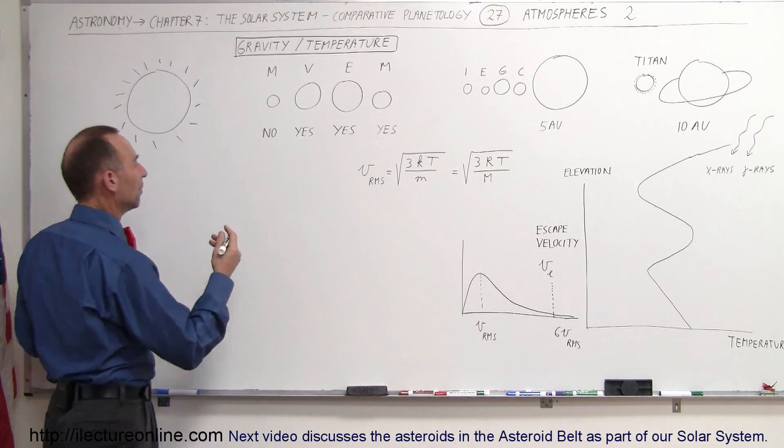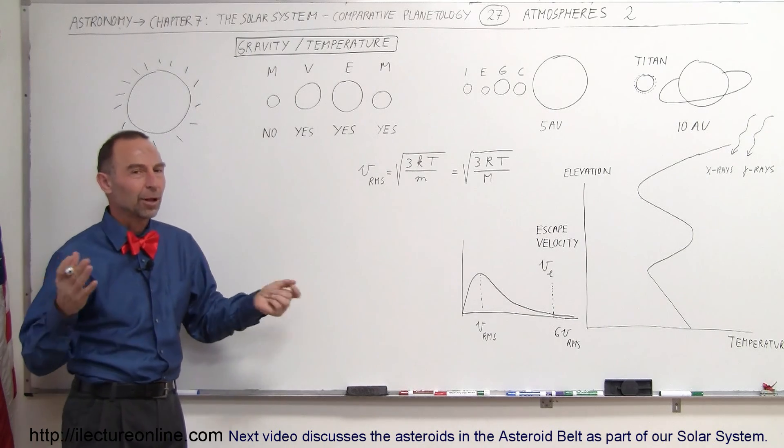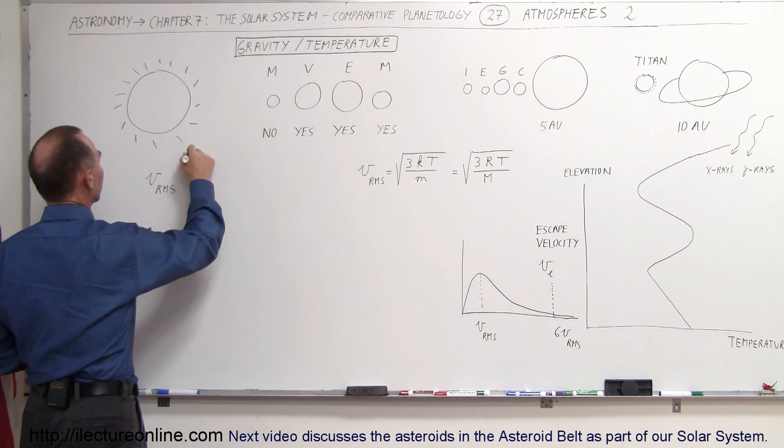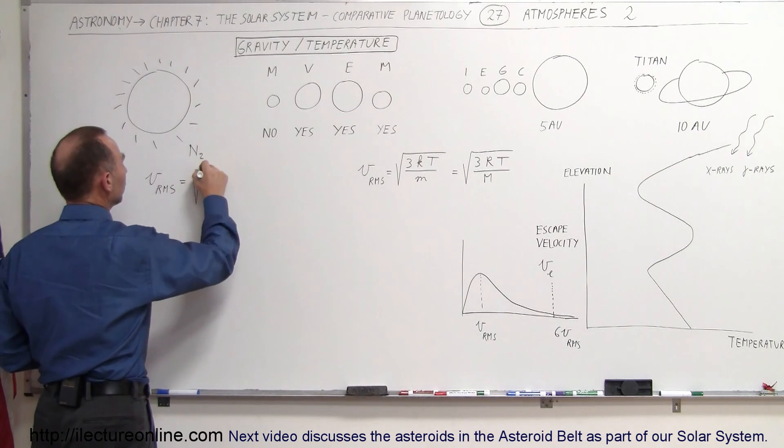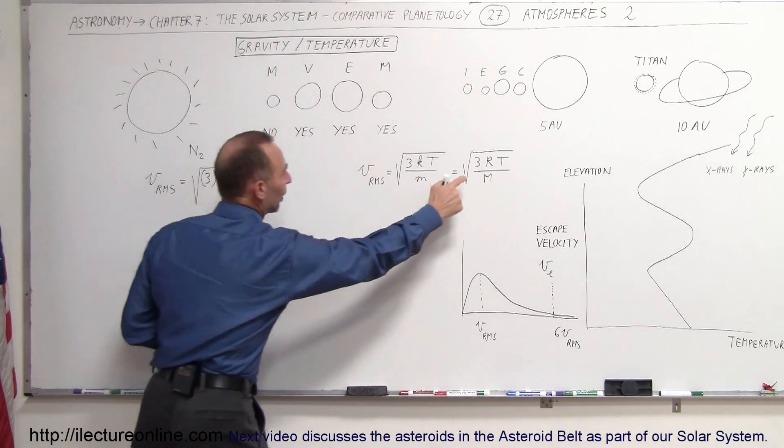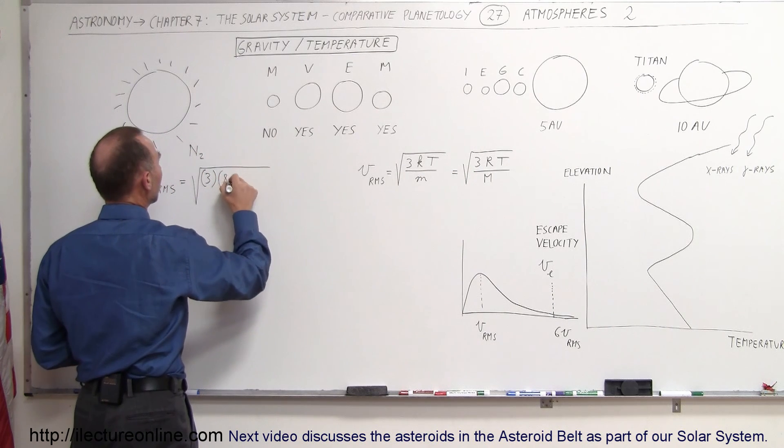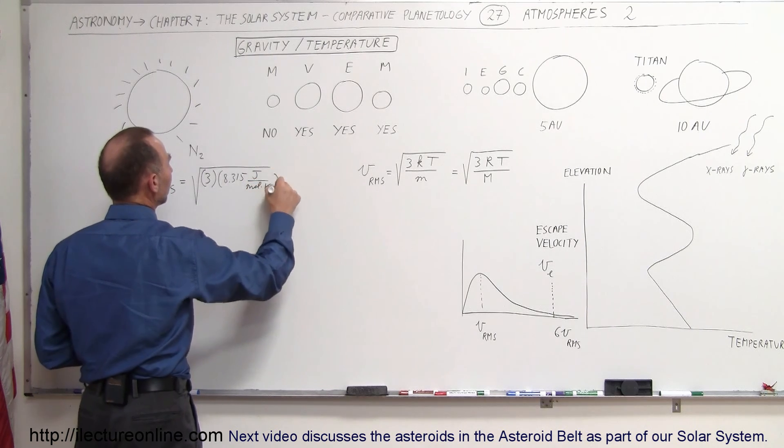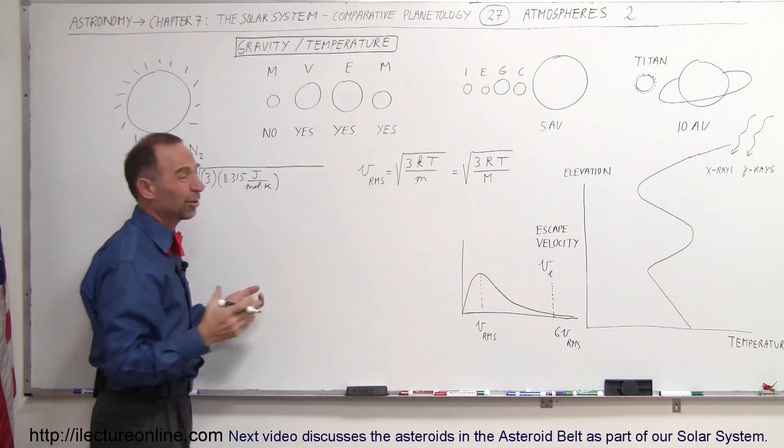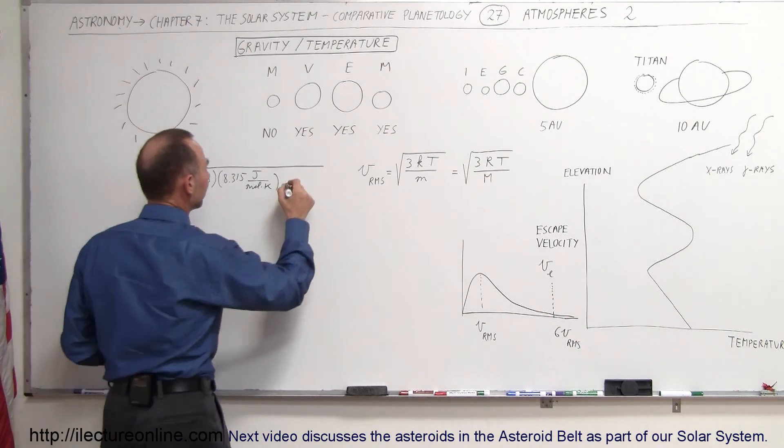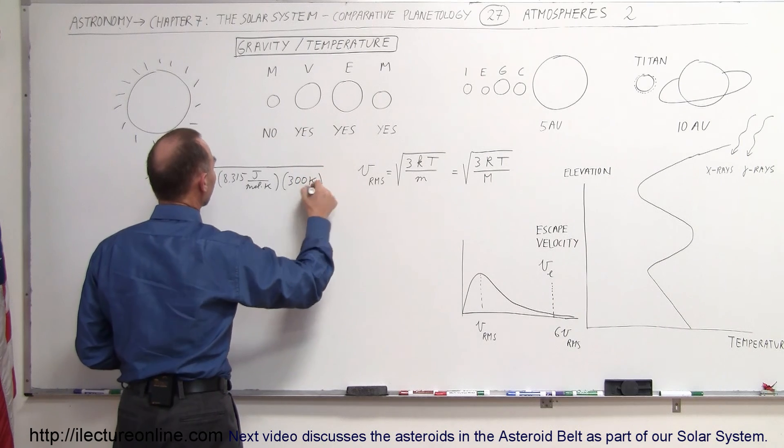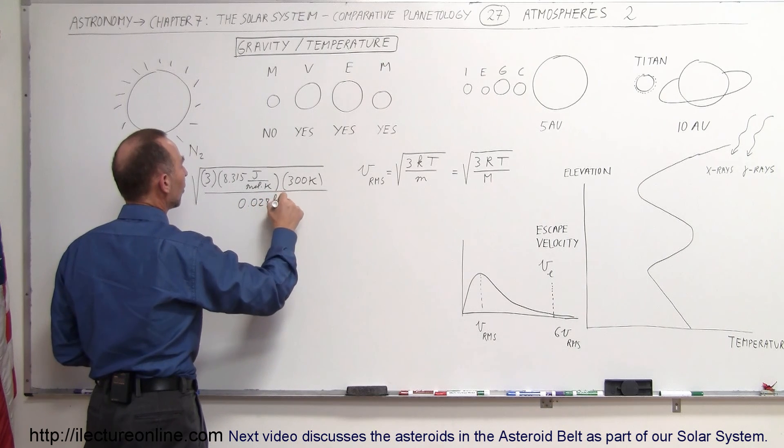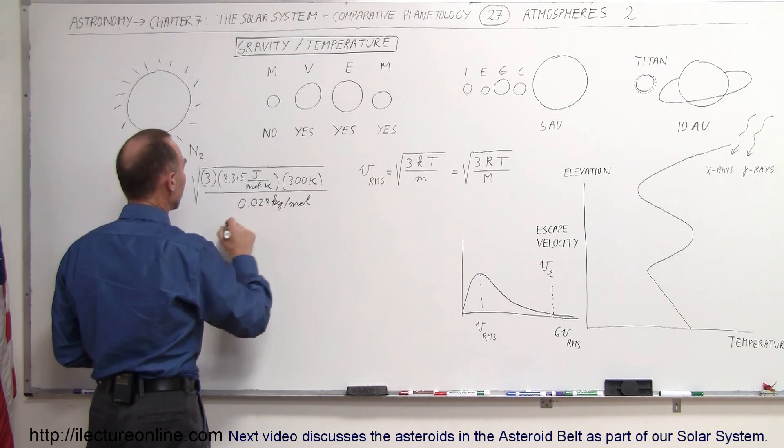So, let's go ahead and find the velocity of a typical molecule on the surface of the Earth. And, of course, the most typical molecule would be the nitrogen molecule. So, the velocity RMS of a nitrogen gas molecule, N2, is equal to the square root of three times 8.315 joules per mole times Kelvin. And then, we're going to multiply that times the temperature, room temperature about 300 Kelvin. So, we'll call it 300 Kelvin, one divided by the molar mass of nitrogen, which is 0.028 kilograms per mole.